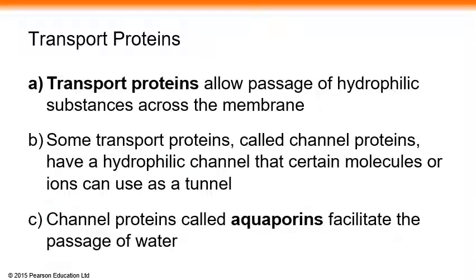Ions, large molecules, or hydrophilic molecules cannot pass through the membrane on their own — but never? No. Those molecules can pass through the membrane when they use transport proteins. These special proteins are specialized to transport large molecules, hydrophilic molecules, or ions. So transport proteins allow passage of hydrophilic substances across the membrane.